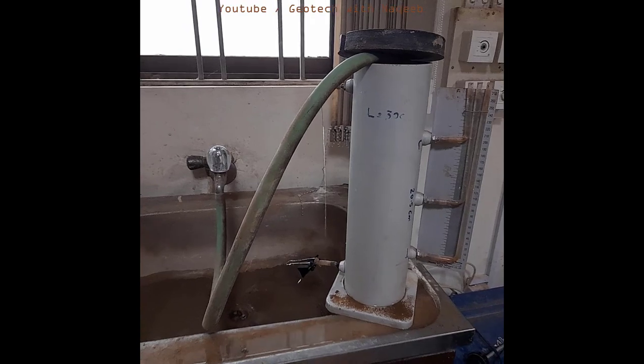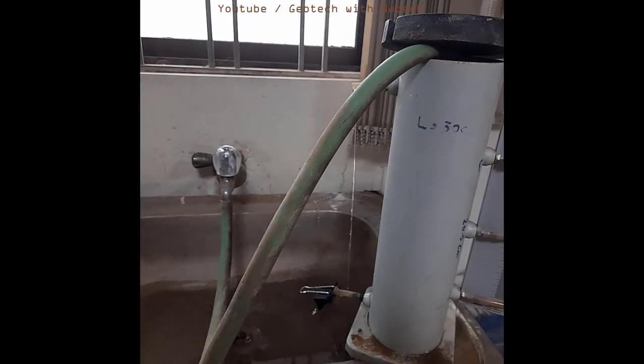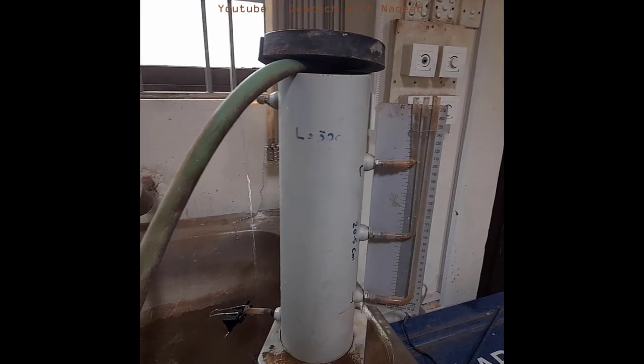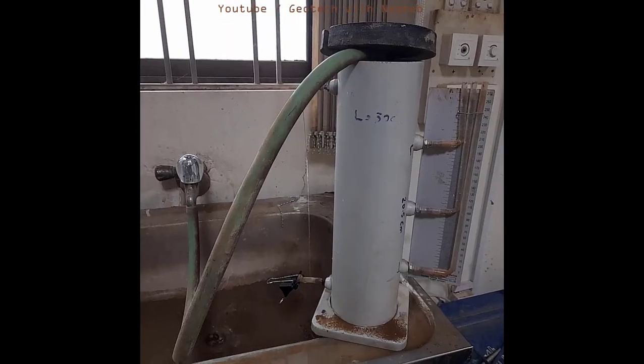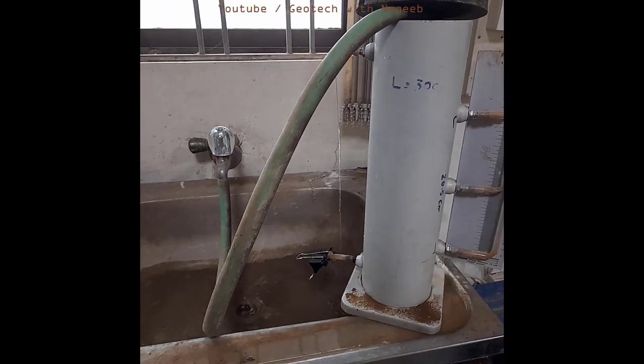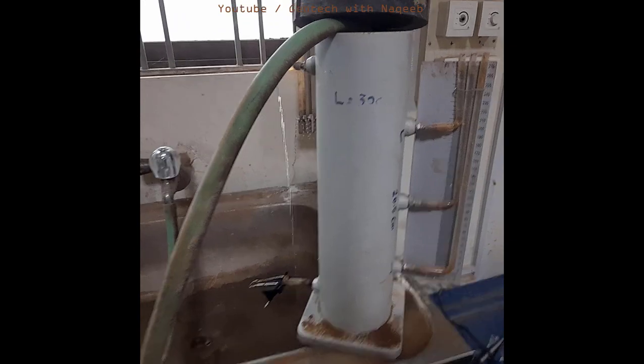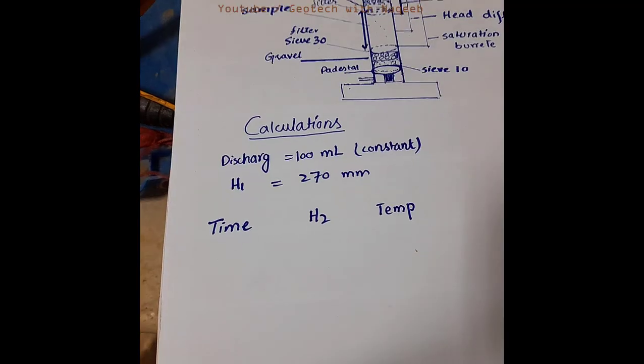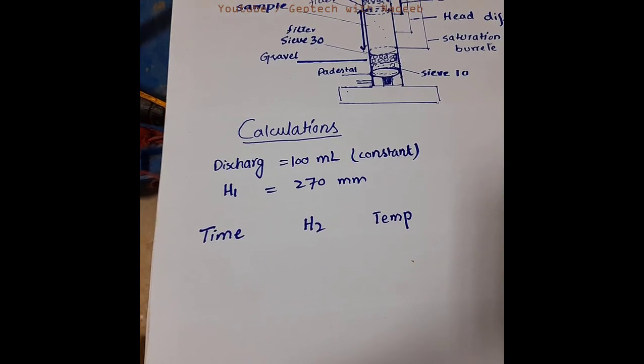In the next step, we add water to the soil sample to saturate it. We place the mold over a sink to get a continuous water supply. When all the burettes are filled with water and water starts overflowing, it means our soil sample is now saturated, and we can proceed with the test.